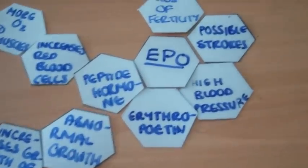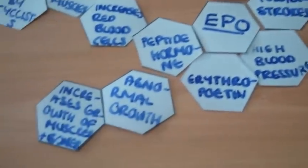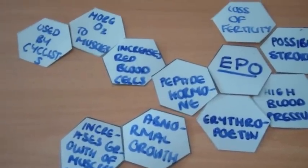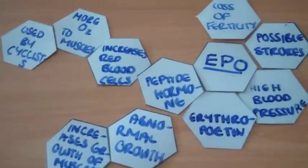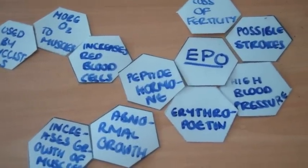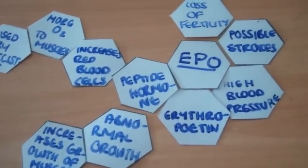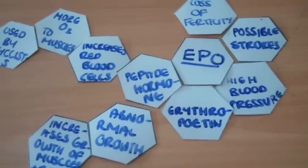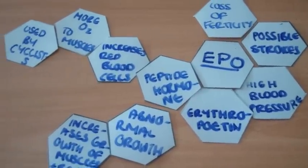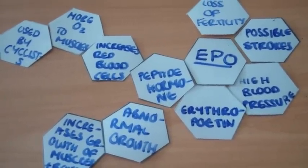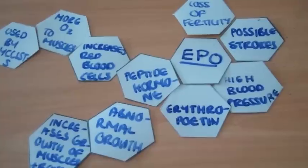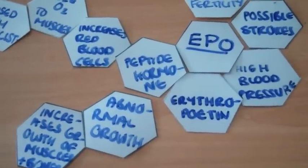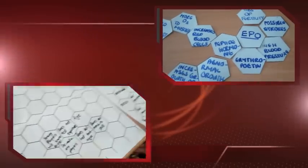There are other peptide hormones like growth hormone, and that increases the growth of your muscles and bones, so it can lead to abnormal growth. EPO can give a loss of fertility, possible strokes, high blood pressure, and its actual name is erythropoietin. Well done, thank you very much.